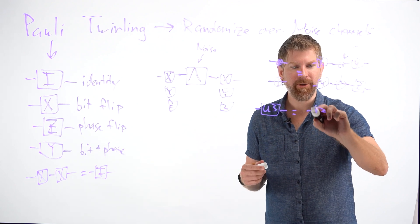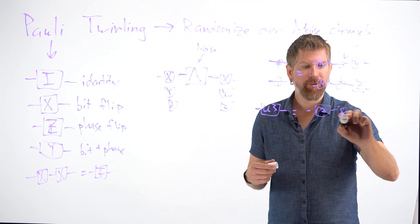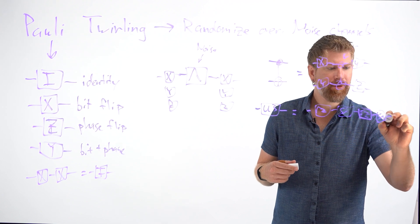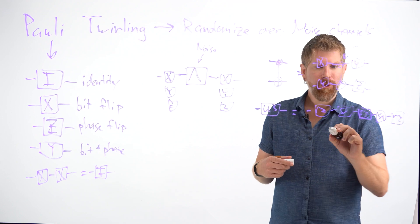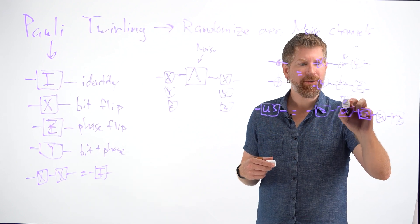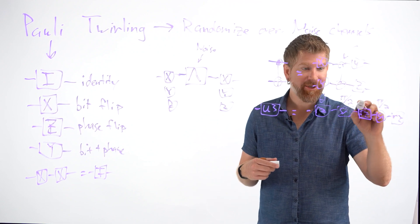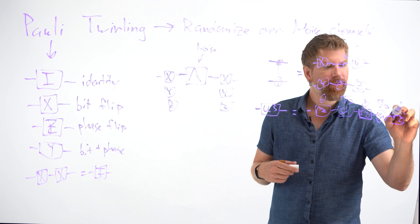This is going to equal an RZ, a square root of X, an RZ, a square root of X, and an RZ, where these SXs are actually physical microwave pulses, and these RZs are actually frame changes. They are just done in software.